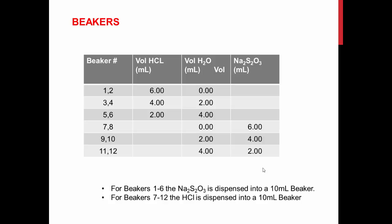Here is a summary of what will be added to each beaker. In beakers 1 to 6, you will vary the volume of HCl and make the total volume up to 10 mL with water, while sodium thiosulfate is dispensed into a 10 mL beaker. In beakers 7 to 12, the sodium thiosulfate volume will be varied and made up to 10 mL with water, and HCl will be dispensed into a 10 mL beaker.